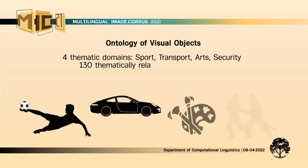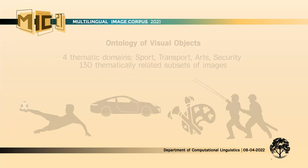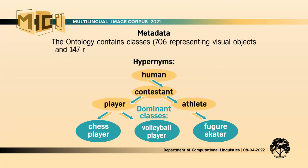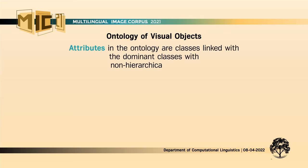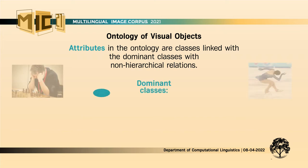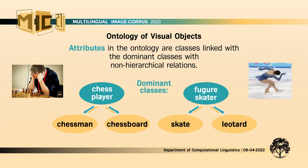The dataset contains four thematic domains — sports, transport, arts, and security — which group highly related dominant classes such as tennis player, soccer player, limousine, taxi, singer, dancer, fireman, and soldier, in 130 subsets of images. The ontology also embraces the hypernyms of dominant classes up to the highest hypernym denoting a concrete object. For example, the hypernyms of chess player are player, contestant, and person, and the hypernyms of figure skater are athlete, contestant, and person. Attribute classes are linked with dominant classes via non-hierarchical relations; for example, attribute classes for chess player are chess man and chess board, while for figure skater they are skate and in some cases leotard.